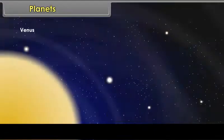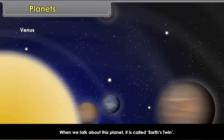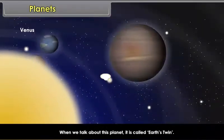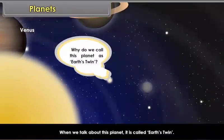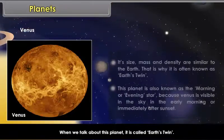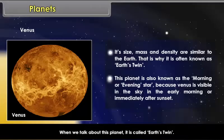Venus. When we talk about this planet, it is called Earth's twin. Why do we call this planet as Earth's twin? Its size, mass and density are similar to the Earth. That is why it is often known as Earth's twin.